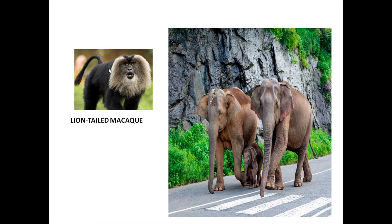The lion-tailed macaque feeds on fruits, seeds, young leaves, stems, flowers, and birds. It also searches for insects under the bark of trees. It is able to get sufficient food on trees and rarely comes down to the ground.